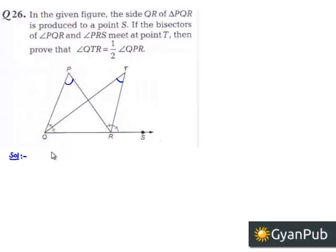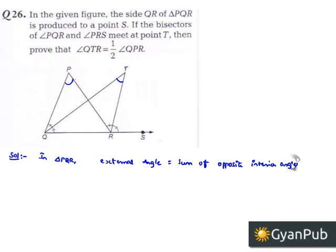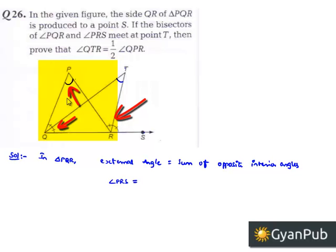In solution, let us consider triangle PQR. We know that in any triangle, the external angle is equal to the sum of two opposite interior angles. Therefore, we can say that the exterior angle PRS is equal to the sum of two opposite interior angles, that is angle QPR plus angle PQR.